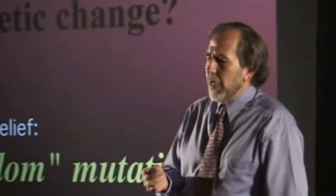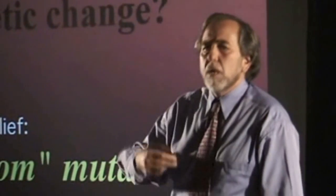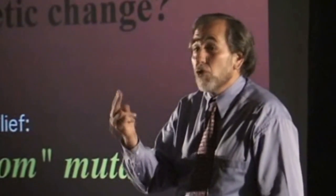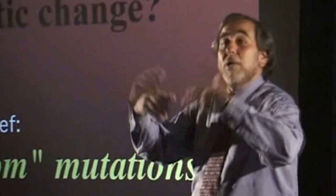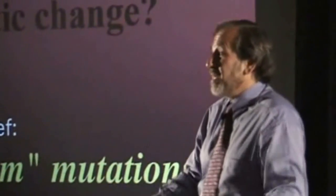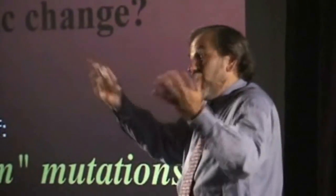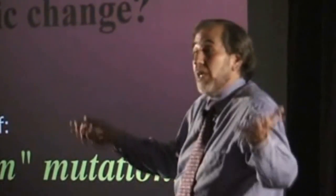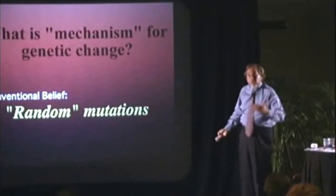What does random mutation mean? You can chemically cause a mutation to occur, but what you can't control is the outcome — the outcome is always random. That's where Darwinian belief comes in: that evolution was random changes in the genes, that genes are only changing by accident. That's conventional belief.